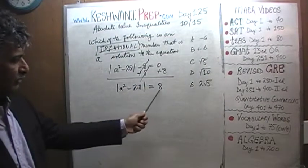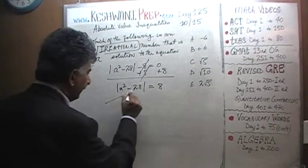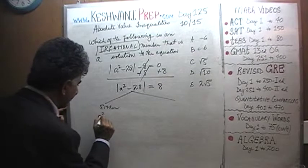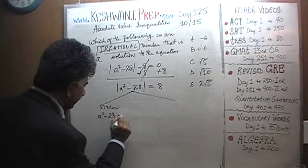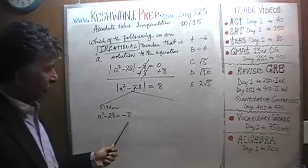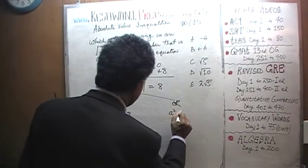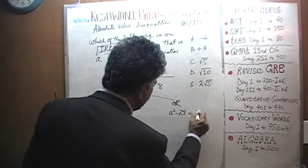If the absolute value of this quantity is equal to 8, that implies that either a squared minus 28 is going to be equal to negative 8, because the absolute value of negative 8 is 8, or a squared minus 28 would have to equal 8.